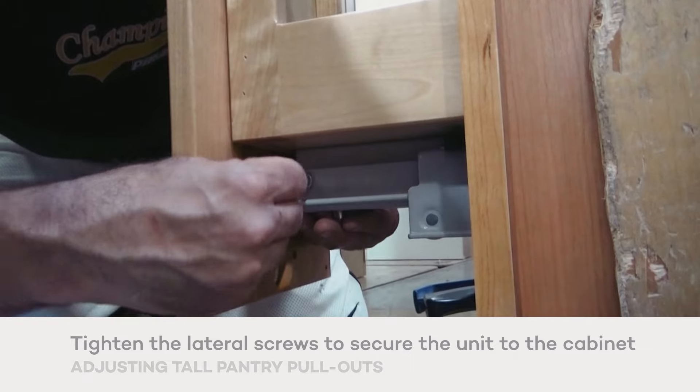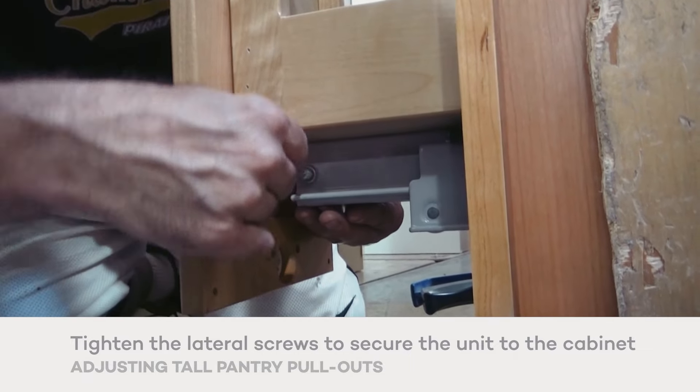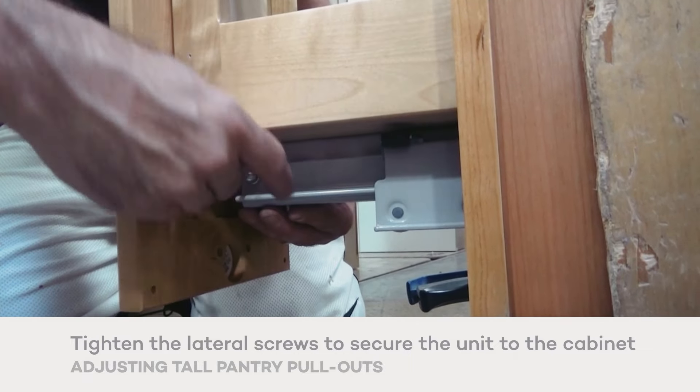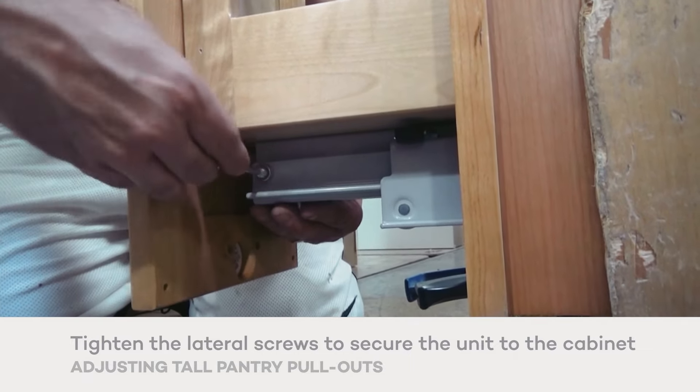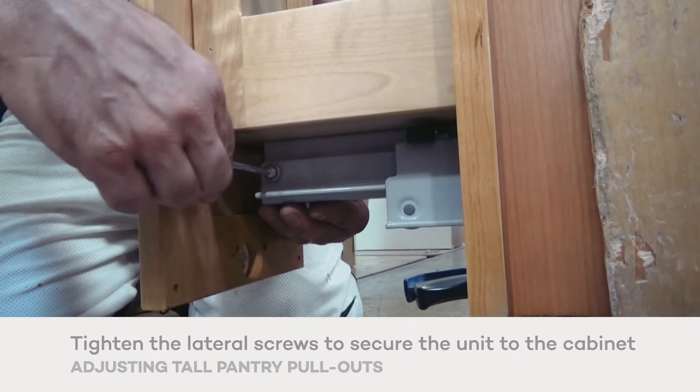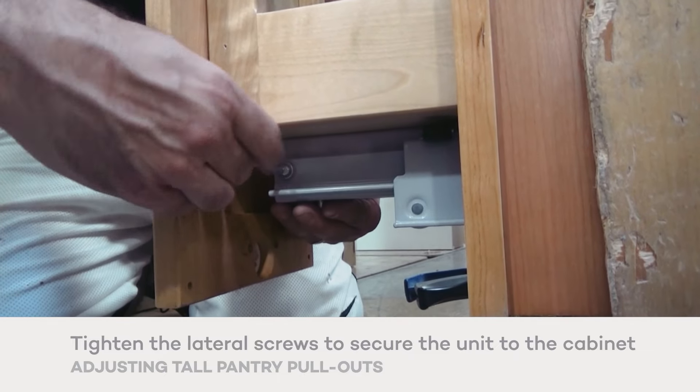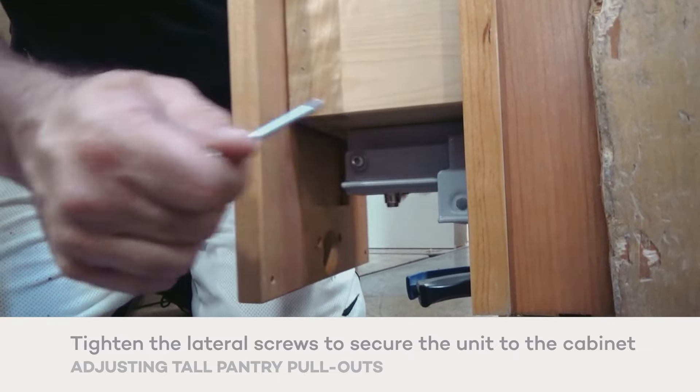To fully tighten the unit to the cabinet after delivery and installation, tighten the lateral adjustment screws on the underside of the unit. Note that these screws are not tightened during assembly since some units have been damaged when the screws were fully tight prior to shipment.